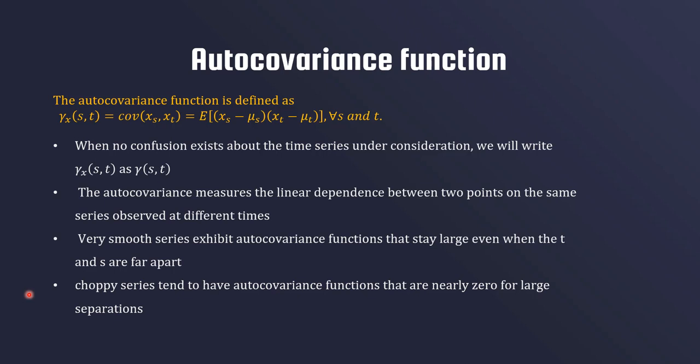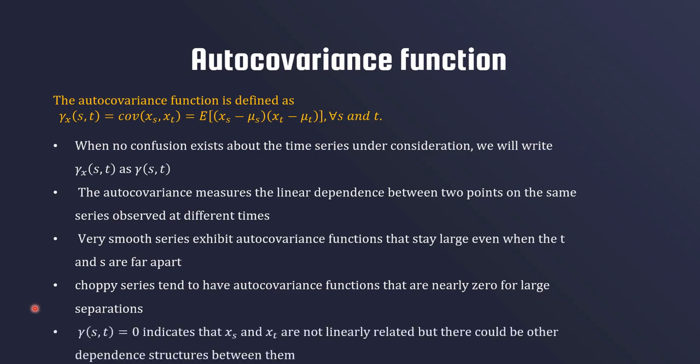White noise appears very choppy. γ(s,t) = 0 indicates that X_s and X_t are not linearly related, but there could be some other dependent structure between them — they could be non-linearly related.